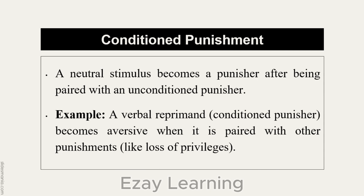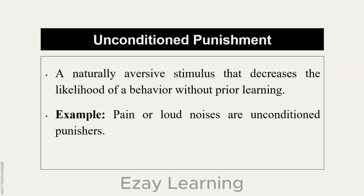When a verbal reprimand is paired with the loss of a privilege, the verbal reprimand becomes a conditioned punisher. If someone is just reprimanding us for no reason, we may not react strongly, but when we are also experiencing an unconditioned punisher — losing a privilege — the reprimand becomes conditioned. Unconditioned punishment is a naturally aversive stimulus that decreases the likelihood of a behavior without prior learning.